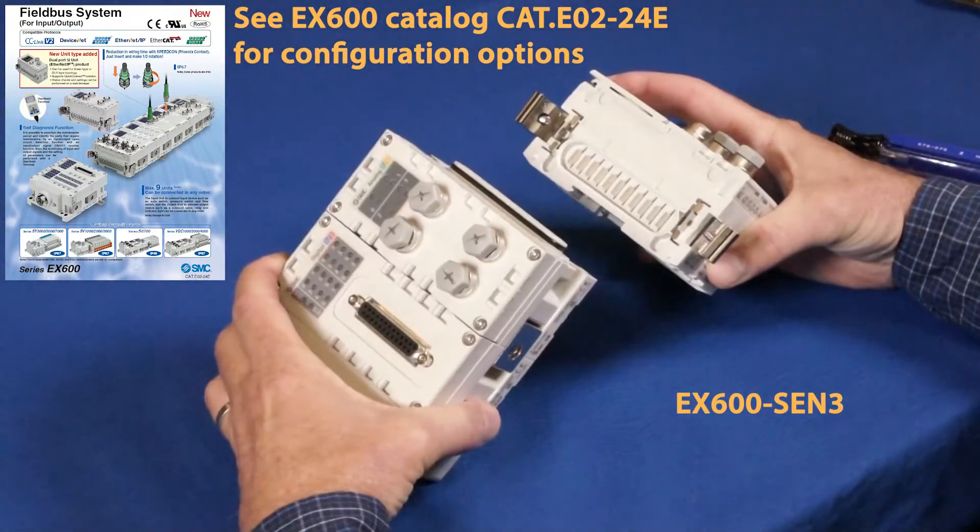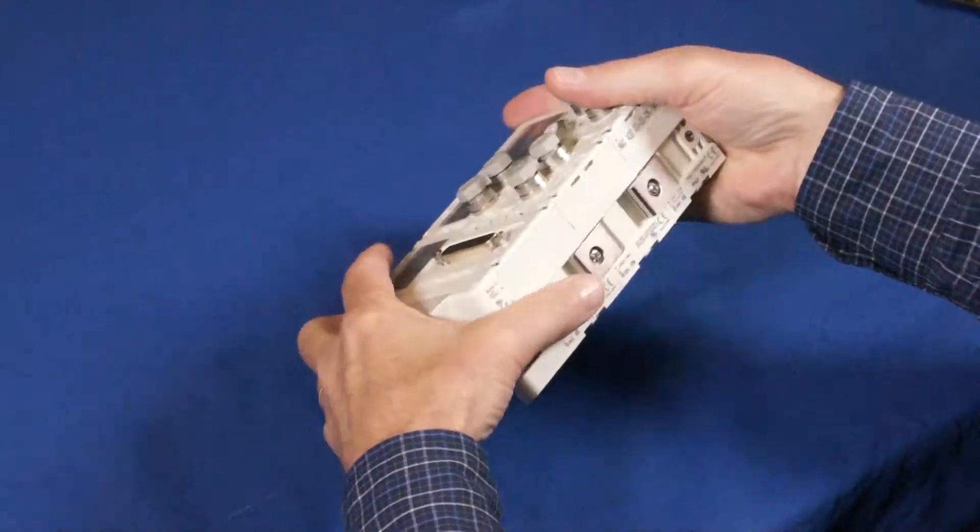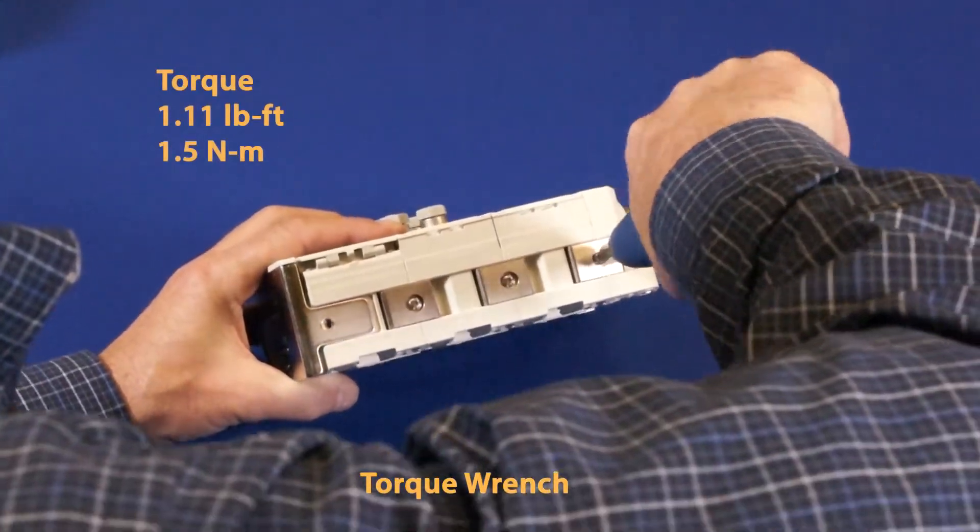After the IO, add the serial interface unit to the far right. Tighten the side brackets to the torque shown.